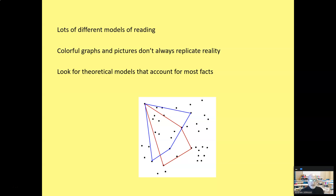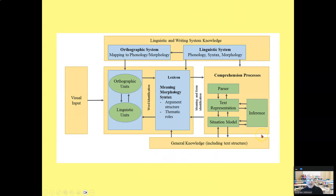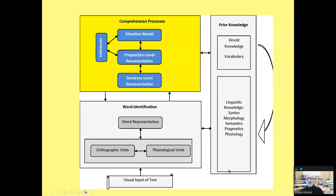Don't be fooled by the colorful graphs and pictures, because these don't always replicate reality. When looking at theoretical models and theories, you always have to ask which one accounts for the most facts. Complex doesn't mean it's better — it just means it's more complicated. It doesn't mean it accounts for the most facts. Complicated doesn't mean it is more robust.